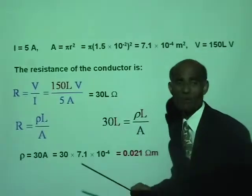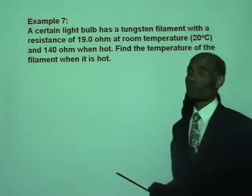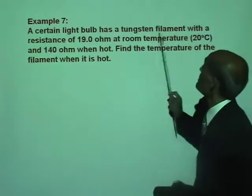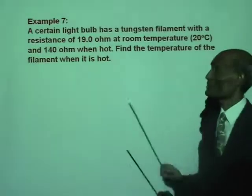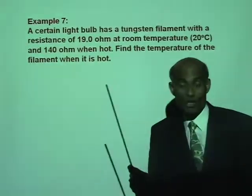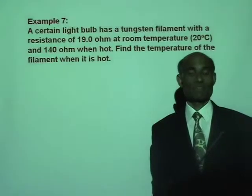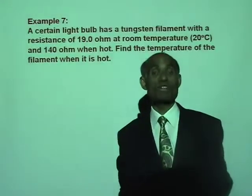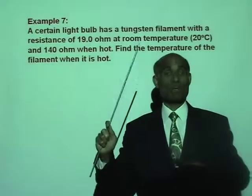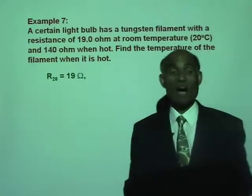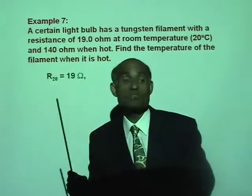Let's look through this problem one more time — it has many elements to take note of. One more example: a certain light bulb has a tungsten filament with a resistance of 19 ohm at room temperature, which is 20 degrees Celsius, and 140 ohm when hot. Find the temperature of the filament when it is hot. We'll use the equation connecting resistance at any temperature to resistance at 20 degrees Celsius: R equals R₂₀ times (1 plus alpha times (T minus 20)).